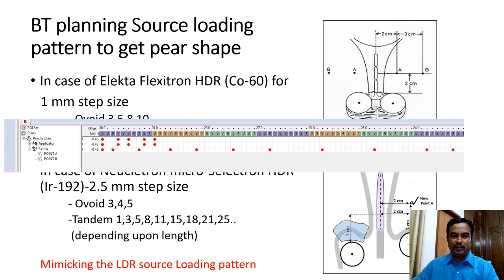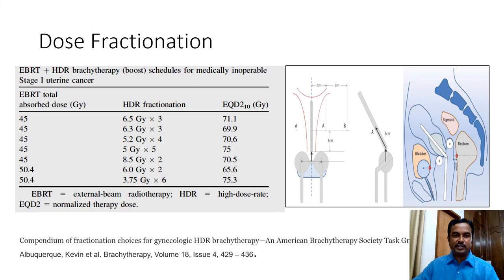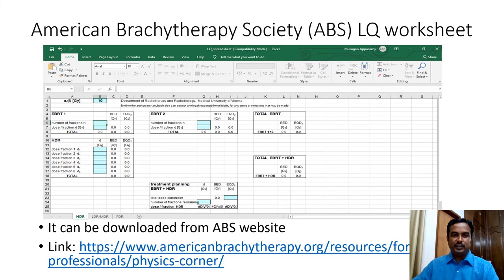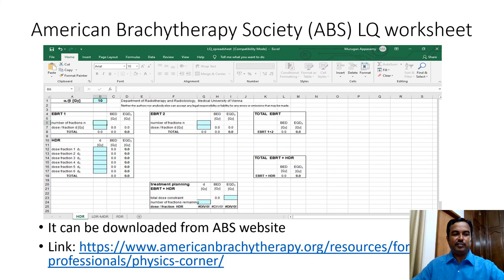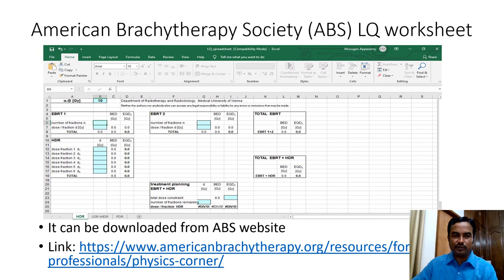This shows the radiation source loading pattern for Elekta HDR, showing the loading pattern in both ovoid and tandem using iridium-192, which helps in creating the pear-shaped isodose line in case of CA cervix. This slide shows the dose fractionation scheme recommended by the American Brachytherapy Society in combination with external radiation therapy. The problem most institutions face is difficulty adding HDR dose along with EBRT because the dose rate and treatment time vary between the two modalities. There is a linear-quadratic model available, and the ABS has provided a spreadsheet where you can enter the number of fractions and EBRT details along with preferred dose per fraction for HDR brachytherapy.